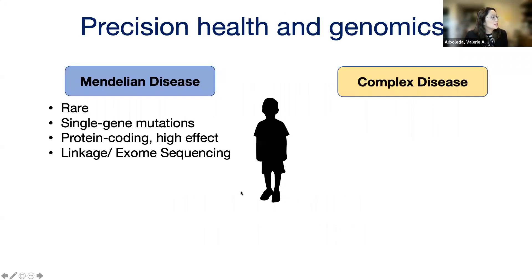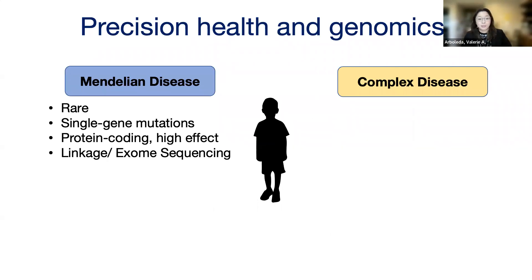When I think through genetics and health and disease, often what comes up is precision health and genomics. I think about genetics and genomics in two distinct spaces.